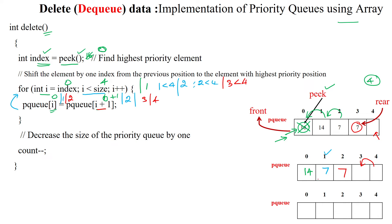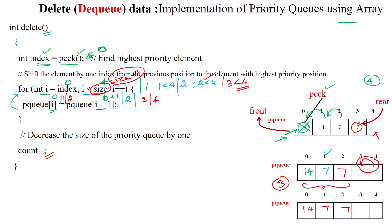Index three is now free. All the data has been moved one position back. The count is decremented to denote the number of elements in the priority queue, which is now three. The final priority queue contains 14, 7, 7. To avoid copying the empty slot, we can use size minus one as the loop boundary, stopping before the free space at index three. This is the procedure to delete an element from the priority queue.